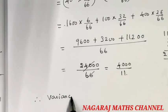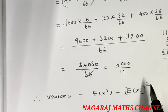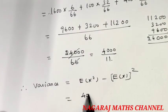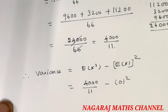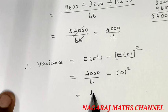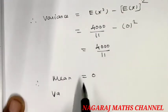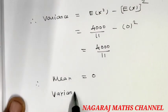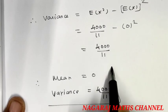Therefore, variance equals E(X²) minus [E(X)]². That is 4000 divided by 11, minus 0 squared, which equals 4000 divided by 11. Hence, the mean is 0 and the variance is 4000 divided by 11.